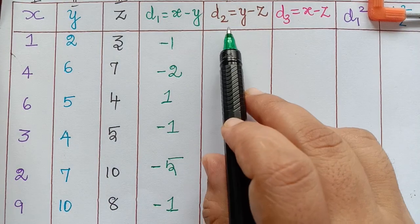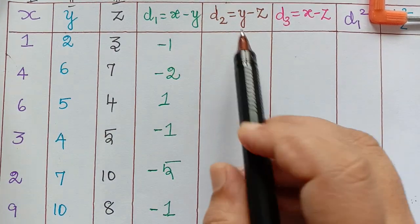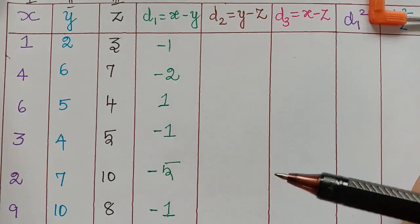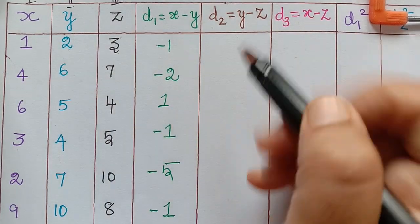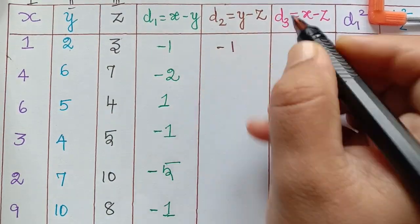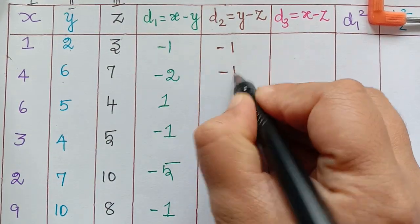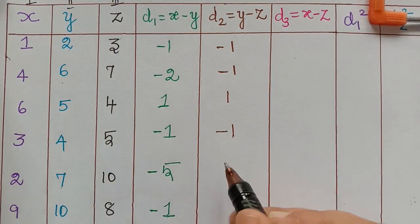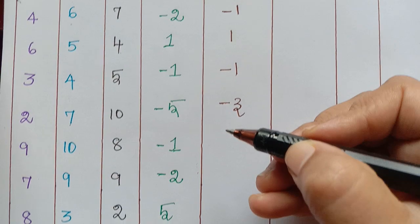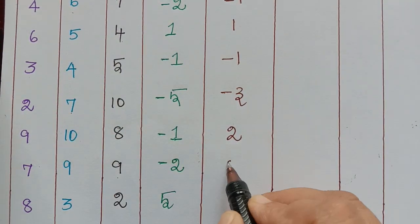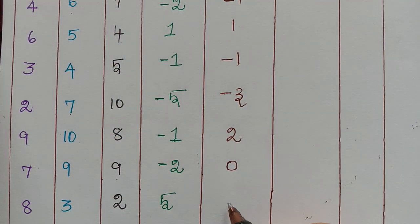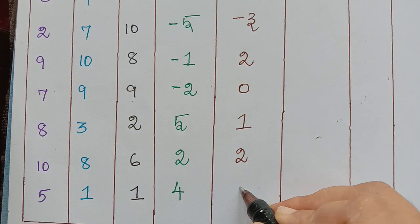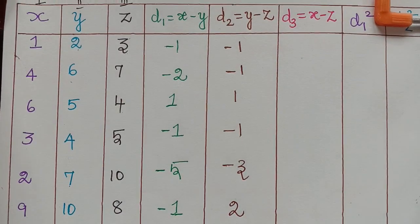Next we find d2, the difference y minus z. So: 2 minus 3 = -1; 6 minus 7 = -1; 5 minus 4 = 1; 4 minus 5 = -1; 7 minus 10 = -3; 10 minus 8 = 2; 9 minus 9 = 0; 3 minus 2 = 1; 8 minus 6 = 2; and 1 minus 1 = 0. So we have found all the d2 values.